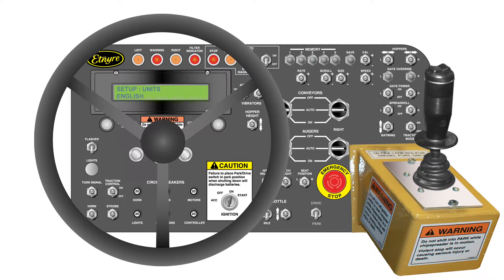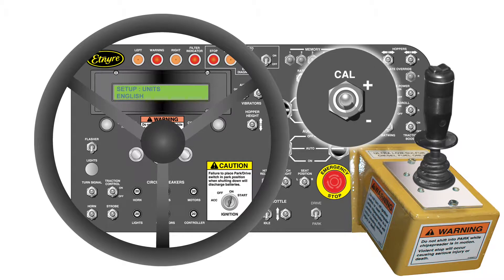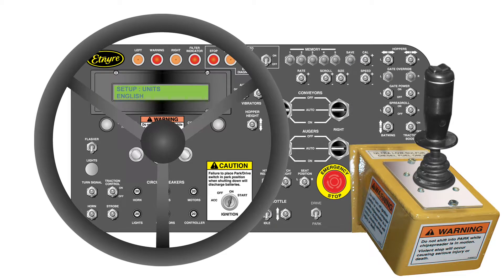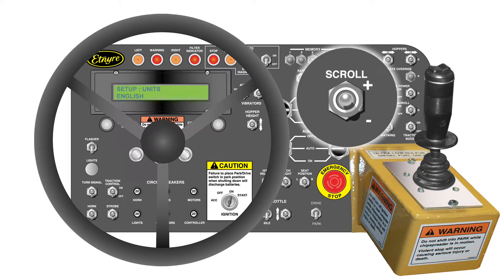This screen is used to display units in either English or metric. Use the cal switch to toggle between English and metric units. Push the scroll switch down to move to the next screen.